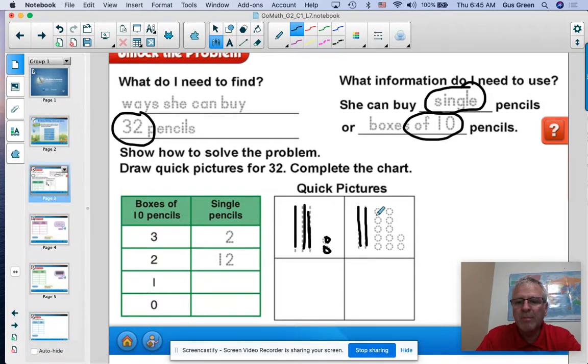This is similar to the problems that we did on Tuesday. I'm going to go ahead and color these in so that I will have 12 singles. Two 10s, 12 singles, and you'll start to see a pattern as we look at this.